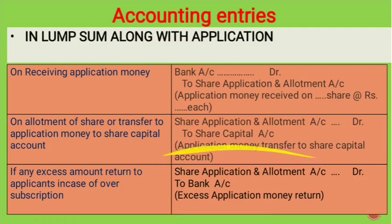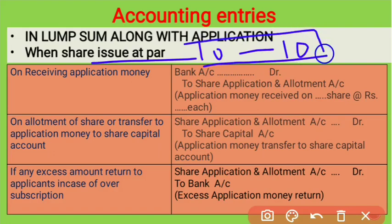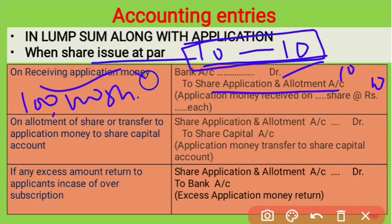Now let's look at the accounting entries. On receiving application money: Bank Account debit to Share Application and Allotment Account. If the company issues 1 lakh shares, then 1 lakh multiplied by ₹10 gives ₹10 lakhs.